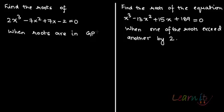Two more examples of finding cubic roots. We will find the roots of the cubic equation 2x³ - 7x² + 7x - 2 = 0, when we are given that the roots are in GP. In this video we will be looking at what happens when roots are in GP, how to solve it, and what happens when we are given the difference between one of the two roots.